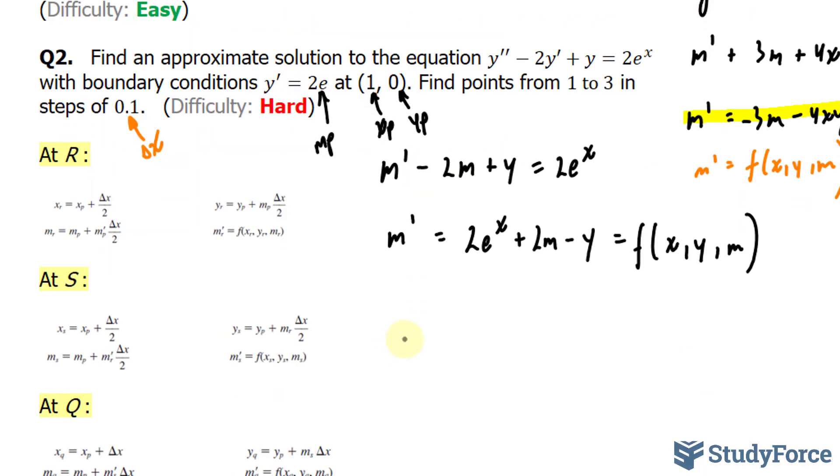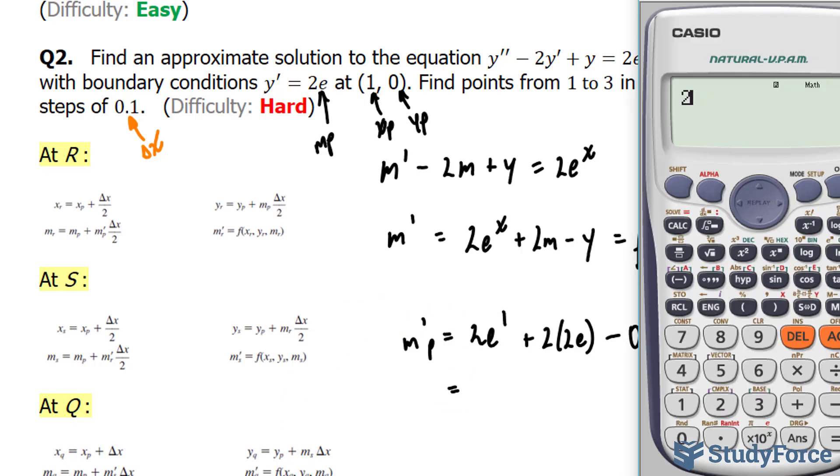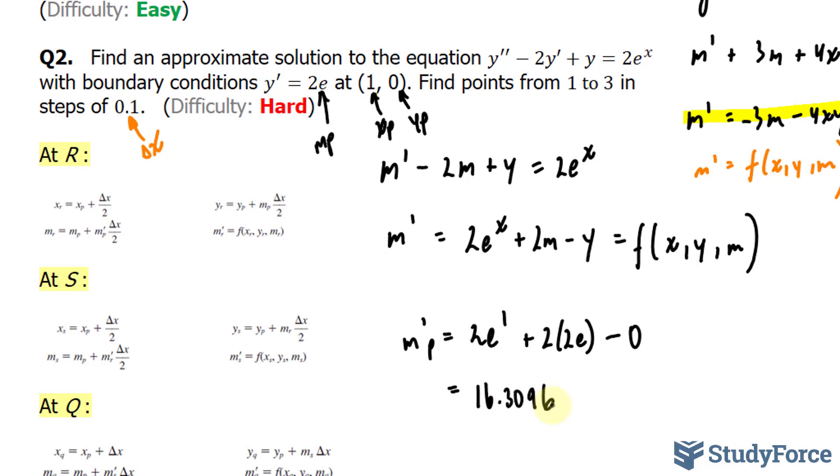Let's go ahead and do that. We have m'_P = 2e^1 + 2 times m, and m can be replaced with 2e, minus our y coordinate 0. Let's use our calculator. Starting off with 2 times e, plus 2 bracket e times 2, minus 0 is 16.3096.